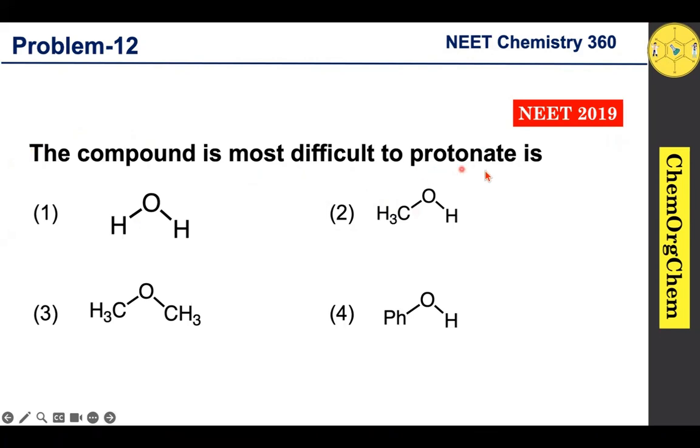According to this problem, the compound most difficult to protonate is—there are four compounds given. Let's figure out together which one is the correct option. This question is based on protonation. Protonation means when you take any of these compounds which react with acid, they readily produce the corresponding protonated compounds.